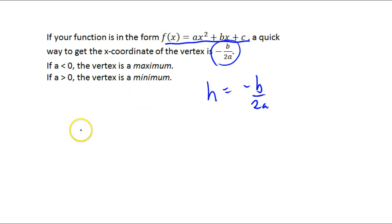So remember that if a is less than 0, the parabola is going like that, which makes your vertex a maximum. And if a is greater than 0, your parabola is going like that, which makes your vertex a minimum.